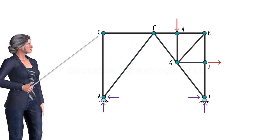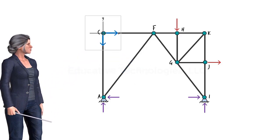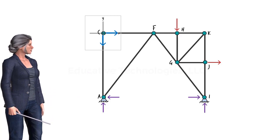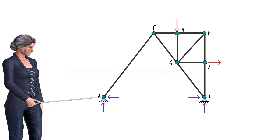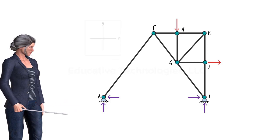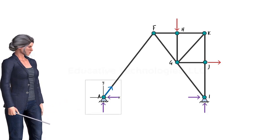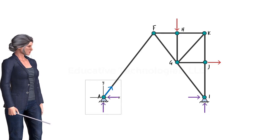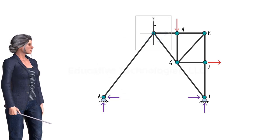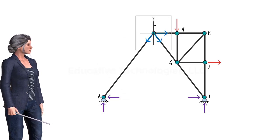Finally, if we place the coordinate system at joint C, since there is only one force acting in either X or Y direction, we can conclude that both AC and CF are zero force members. Now let's examine the remaining joints. At joint A, there are two reaction forces and one member force, which result in two forces along the X axis and two forces along the Y axis, so neither force can be said to be zero. At joint F, the three existing forces yield two X components and two Y components, therefore neither force can be said to be zero.